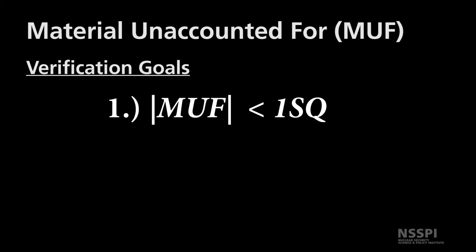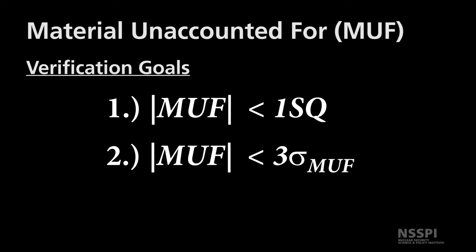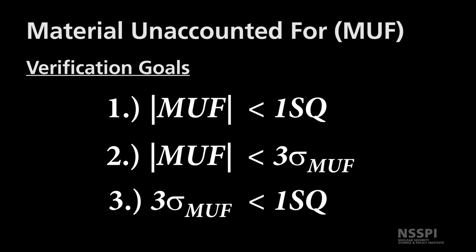When we talk about material unaccounted for, or MUF, for uranium enrichment facilities, we have three verification goals that must be met. First, the comprehensive MUF for a material balance period must be less than one significant quantity. Second, the comprehensive MUF must be less than three times the MUF uncertainty. And third, the threshold of three times the MUF uncertainty must also be less than one significant quantity to ensure that diversion of a significant quantity cannot occur within the acceptable threshold.